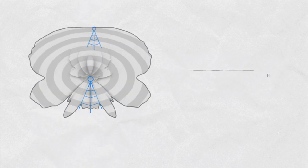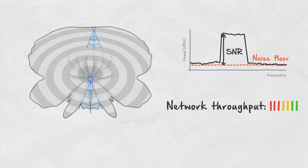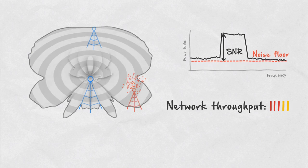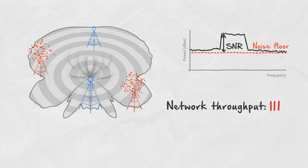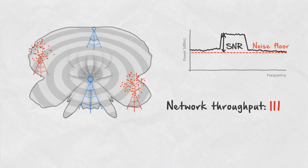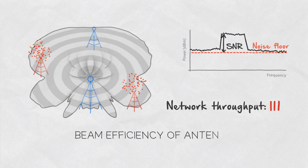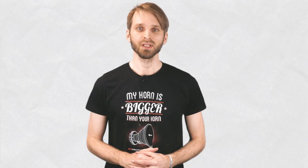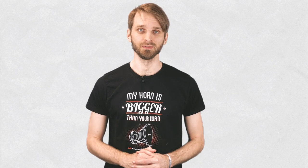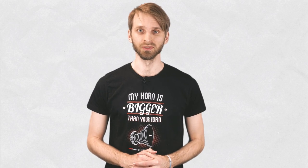Antenna side lobes can cause many problems in WISP networks because they collect interference that decreases the SNR a radio is working with, resulting in decreased throughput. Therefore, the beam efficiency of WISP antennas should be as high as possible. Let's have a look at beam efficiency of antennas commonly used in the WISP industry.